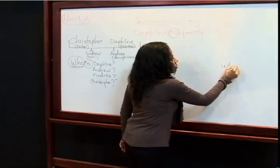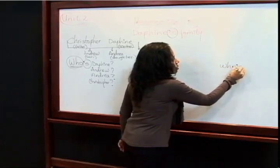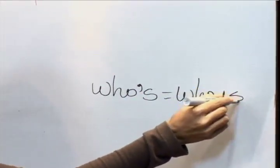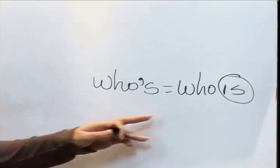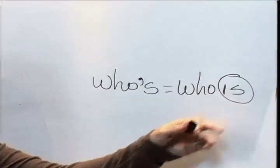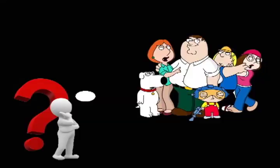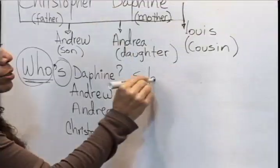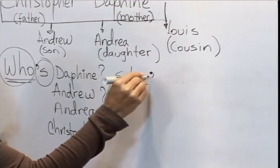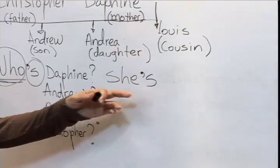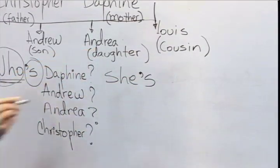Recordemos la contracción: 'whose' es igual que decir 'who is'. Who is Daphne? Ella es — porque estamos hablando de una mujer — usamos la contracción del to be. She's Andrea's mother.